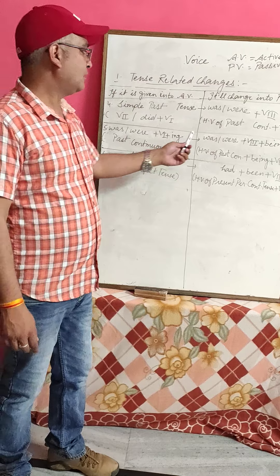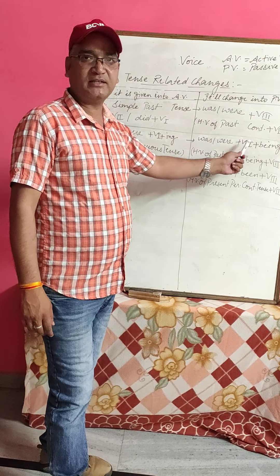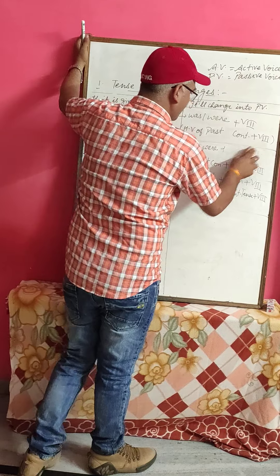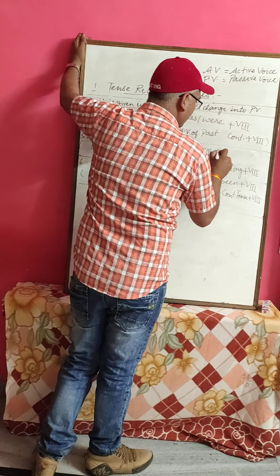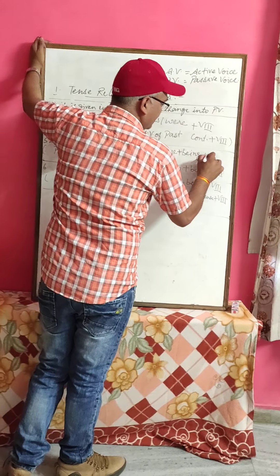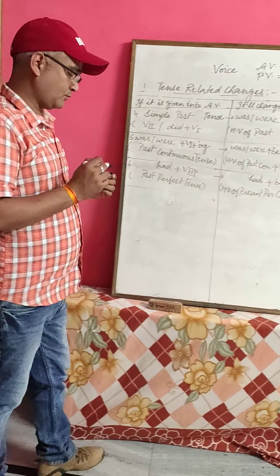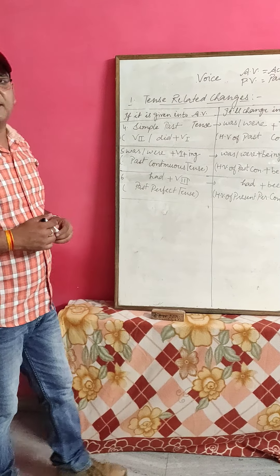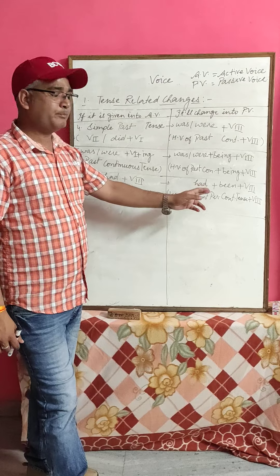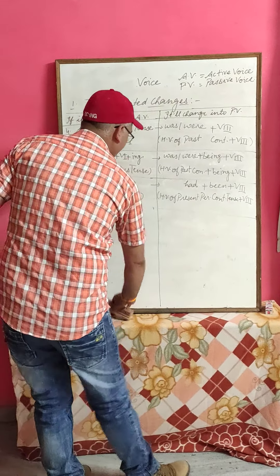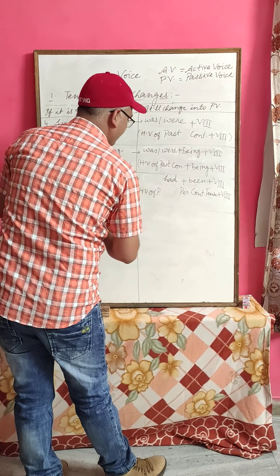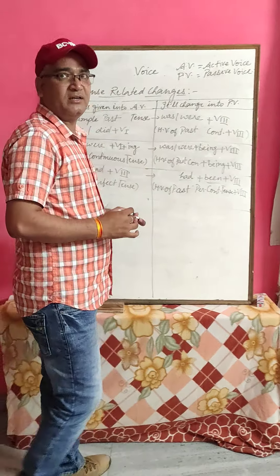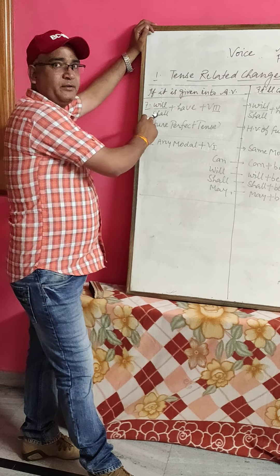For past continuous tense in passive voice, the helping verb is was/were, so the structure is: was/were plus being plus third form of the verb — same as present continuous passive. Next, past perfect tense — which is had plus third form of the verb — will change into had plus been plus third form of the verb in passive voice.